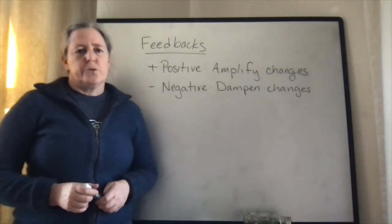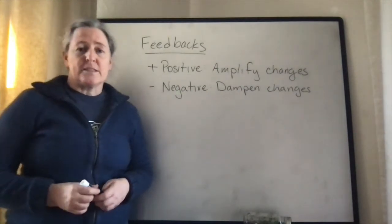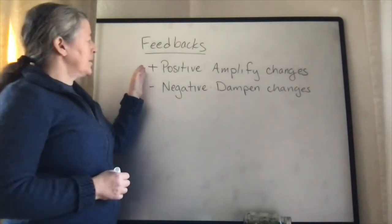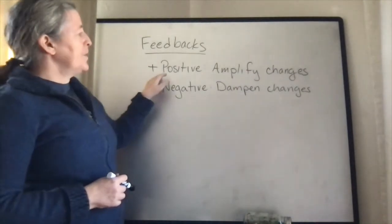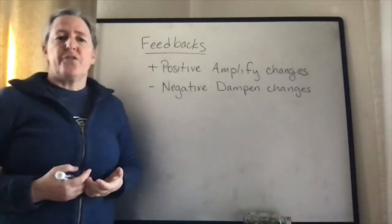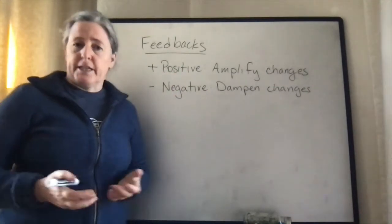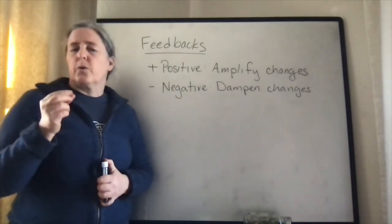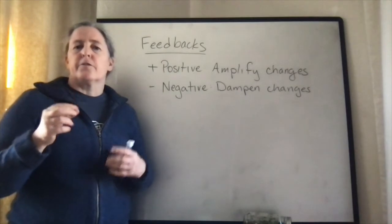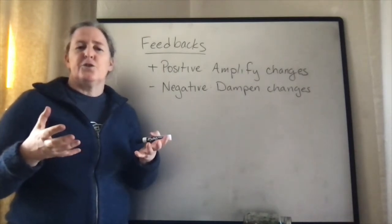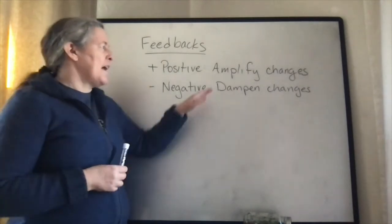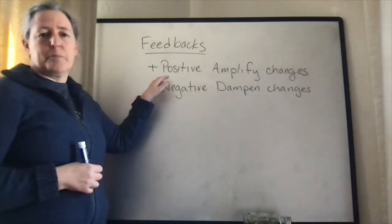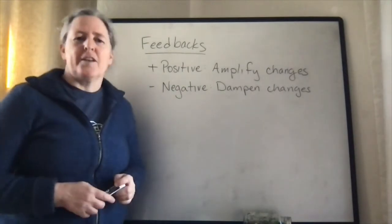Feedbacks are really important to a number of natural processes. In general, there are two types of feedbacks: positive and negative feedbacks. Positive feedbacks are ones that amplify a change. So an example would be if something causes the temperature to go up a little bit and the response of the system is to raise the temperature even more, that small change in temperature is amplified by a positive feedback, or an amplifying feedback.